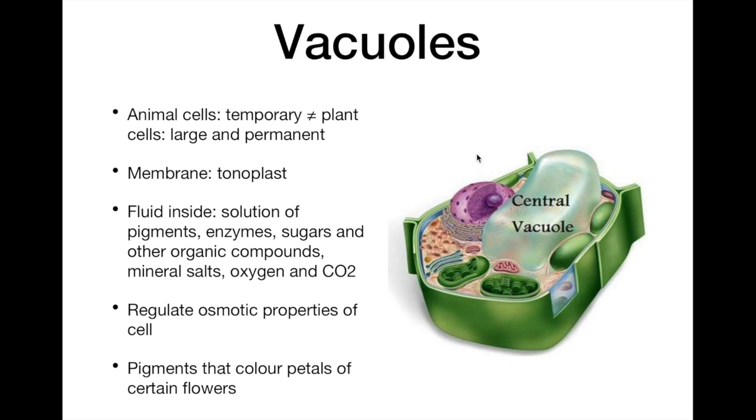Now, we've got vacuoles. Although animal cells may possess small vacuoles, such as phagocytic vacuoles, which are temporary structures, mature plant cells often possess a large permanent central vacuole. You see, it's really large; the vacuole takes most of the space here.